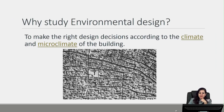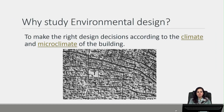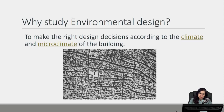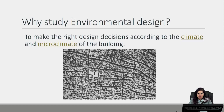So why study environmental design? To make the right design decisions according to the climate and microclimate of buildings. We see here a picture of the traditional urban layout of a Middle Eastern city. What people were trying to do then was to make their own microclimate — to protect people from harsh climatic conditions like high temperatures and sunlight in areas like ours, and to provide as much shading as possible.